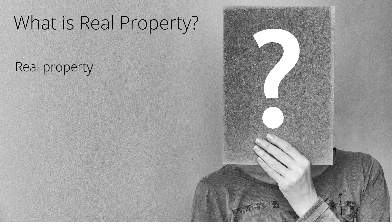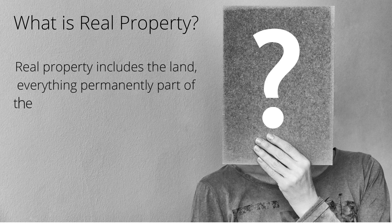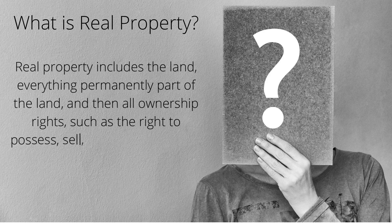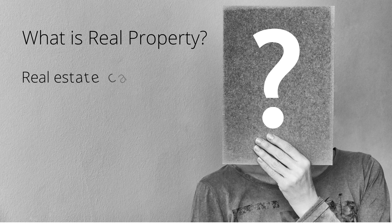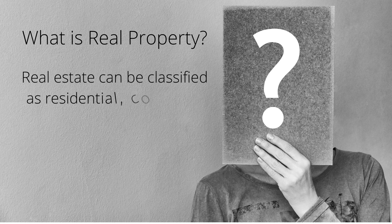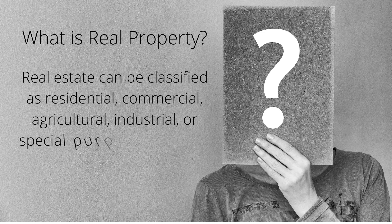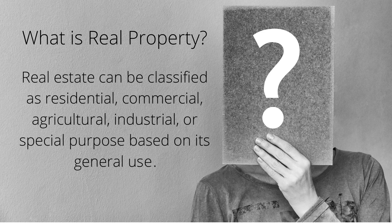What is real property? Real property includes the land, everything permanently part of the land, and all ownership rights, such as the right to possess, sell, lease, and enjoy the land. Real estate can be classified as residential, commercial, agricultural, industrial, or special purpose based on its general use.